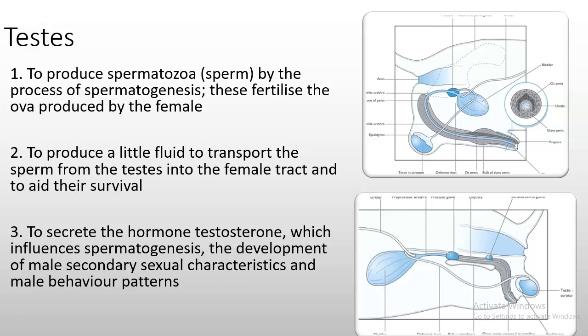The function of the testes or testicles is to produce spermatozoa, also known as sperm, by the process of spermatogenesis. These sperm fertilize the ova produced by the female. A second function is to produce fluid to transport the sperm from the testes into the female tract and to aid in their survival. The third function is to secrete the hormone testosterone, which influences spermatogenesis, the development of male secondary sexual characteristics, and certain male behavioral patterns.